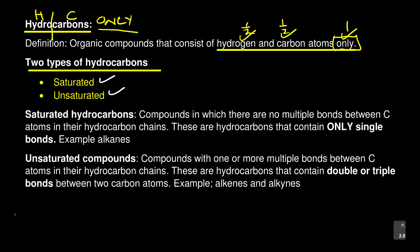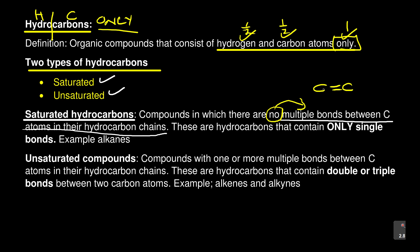Let's define each one of these. What is a saturated hydrocarbon? These are compounds in which there are no multiple bonds between carbon atoms in their hydrocarbon chains. By multiple bonds, examples include carbon double bond carbon, or carbon triple bond carbon. So those are not present in saturated hydrocarbons.